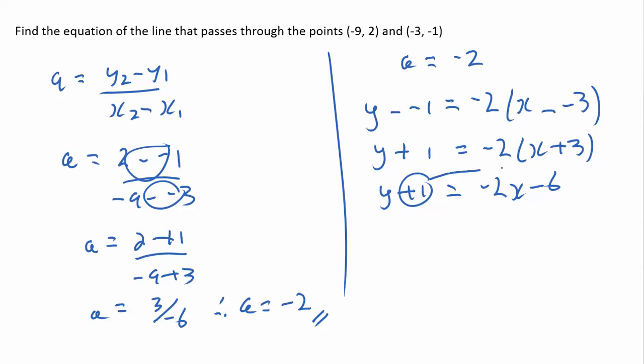Transposing that positive 1 to the other side, y equals negative 2x plus 7 is the equation of the straight line.